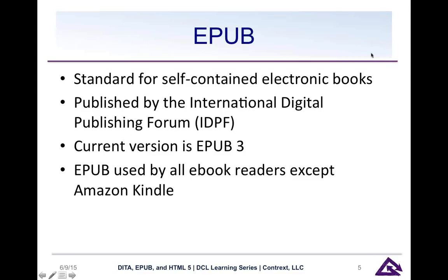EPUB is a standard for electronic books. If you have iBooks, Barnes and Noble Nook, or Kindle, you are familiar with the concept of electronic books. EPUB itself is a standard published by the International Digital Publishing Forum, and the current version of the EPUB standard is EPUB 3. EPUB is used by all the eBook readers except the Amazon Kindle — Amazon has their own proprietary format. But even with the Kindle, you can use an EPUB as the input to the Kindle book publication process. So for all intents and purposes, all electronic book delivery can be done through EPUB one way or another.